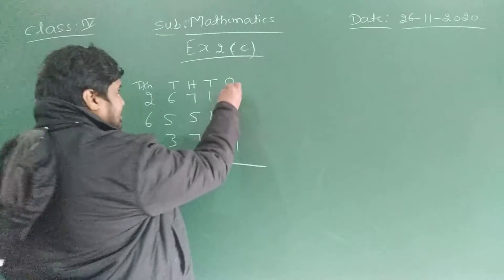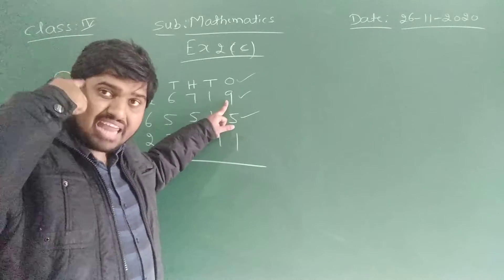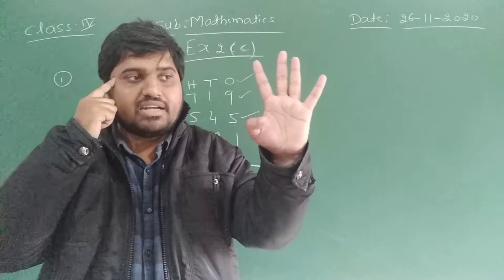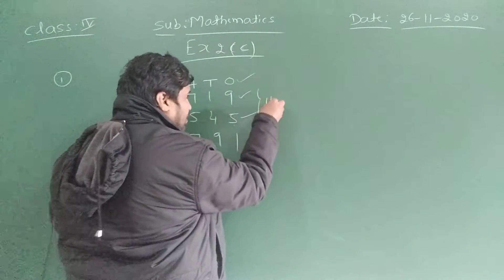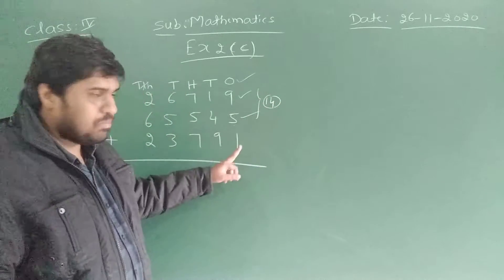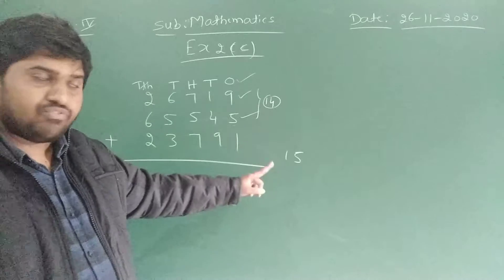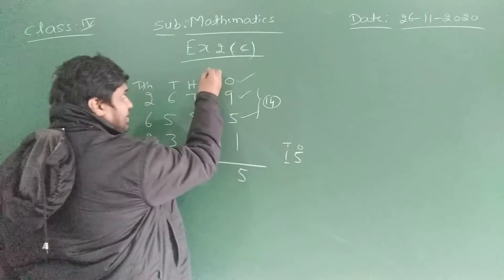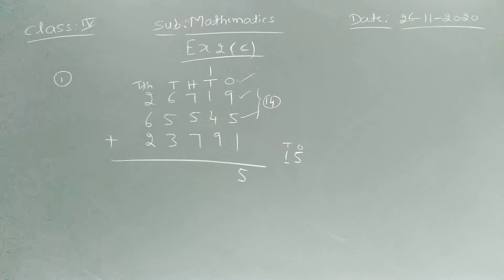You can take the ones. First we have to add nine plus five. Nine in your mind, five in your hand. After nine, you have to count five fingers: nine, ten, eleven, twelve, thirteen, fourteen. Total is fourteen. Fourteen plus one is fifteen. We got the answer fifteen. For fifteen, you write five in the ones place and take one as carry to the tens.